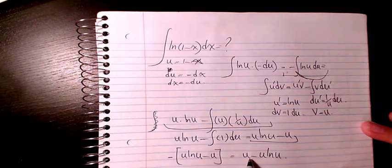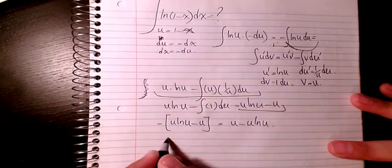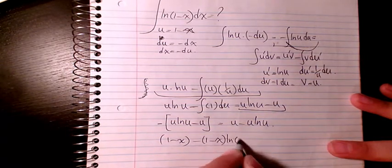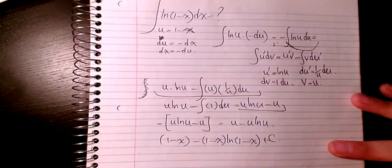So now I change this u to whatever we had earlier, is 1-x. So negative (1-x) ln(1-x) minus (1-x), plus C. So that's the final answer.